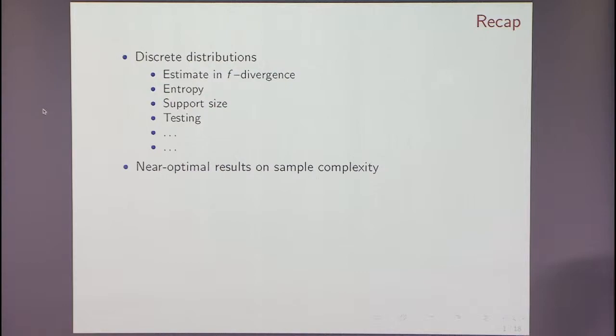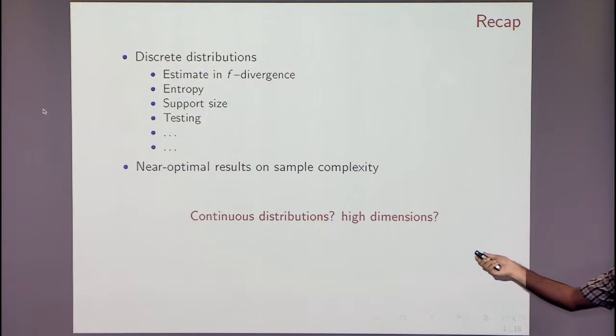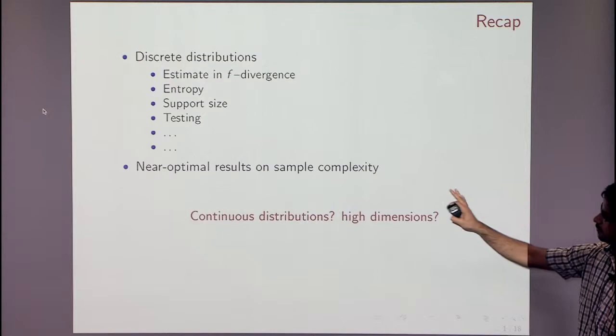So the focus of all these talks was to get near-sample optimal estimators for the problems which we are studying. So we know the sample complexity of most of these up to constants now. So I think a natural question was what happens if you move from discrete to continuous? And if you move from one dimension to high dimensions?